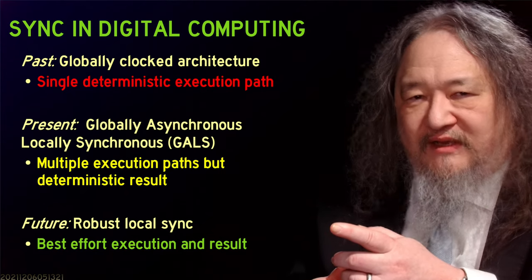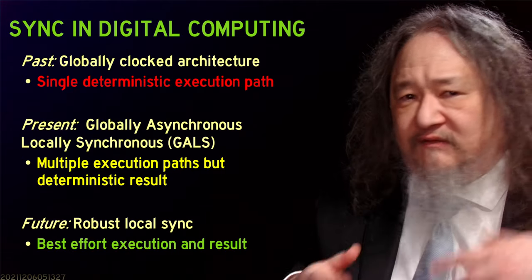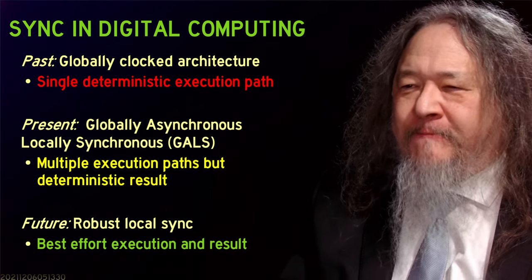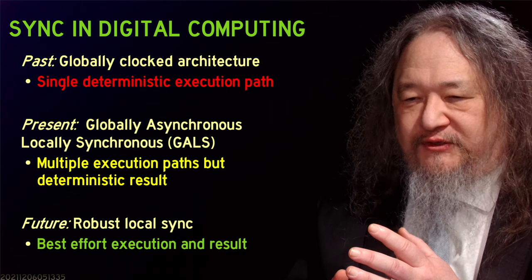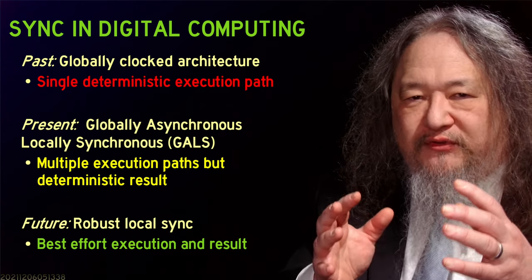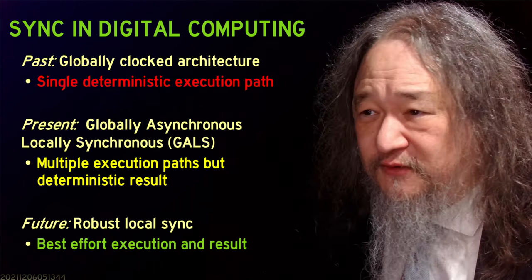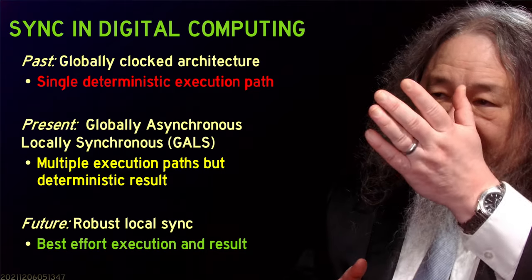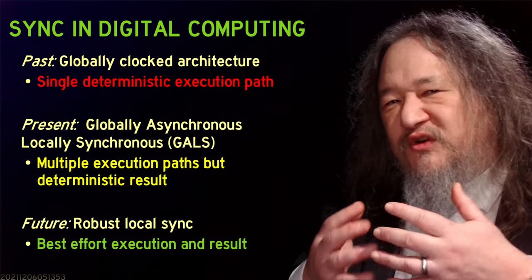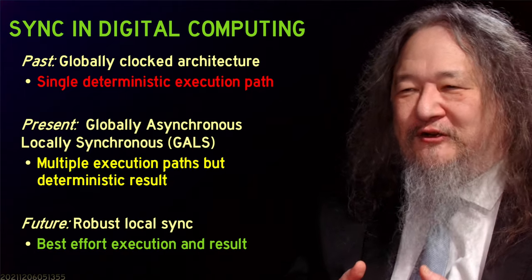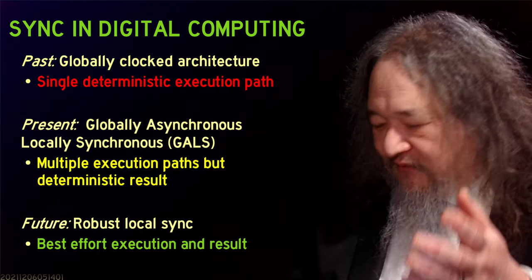The whole best-effort computing thing that I've been pushing on for the last decade or two, as well as the robust-first stuff that leads to this video, is all about saying let's give up on the deterministic result. We'll give up on the deterministic execution path. So now hardware and software both are going to have to deal with failures and stuff coming and going and disappearing, and still somehow make useful progress. The past was single globally clocked architecture; now we have multiple clocks but we're simulating a deterministic result. In the future we're going to need robust local sync.